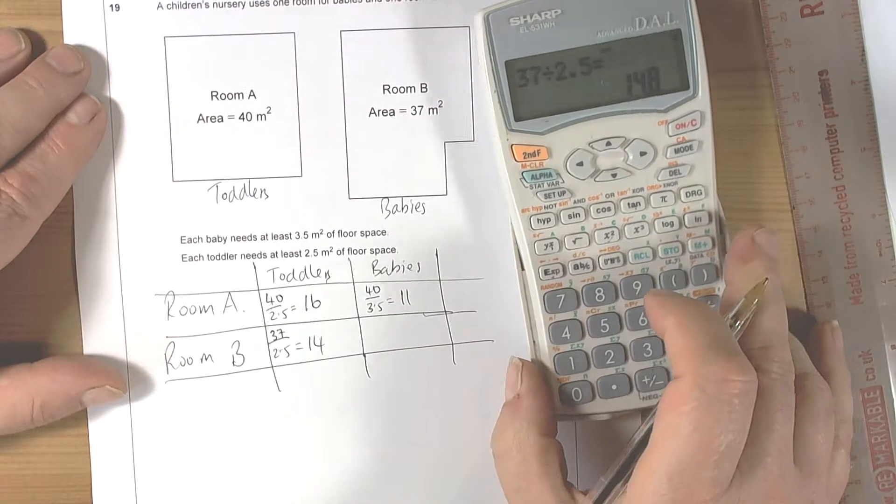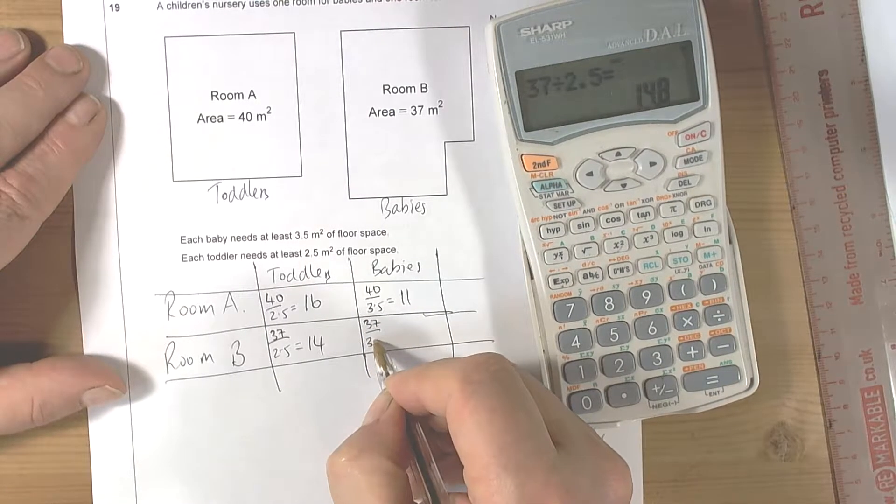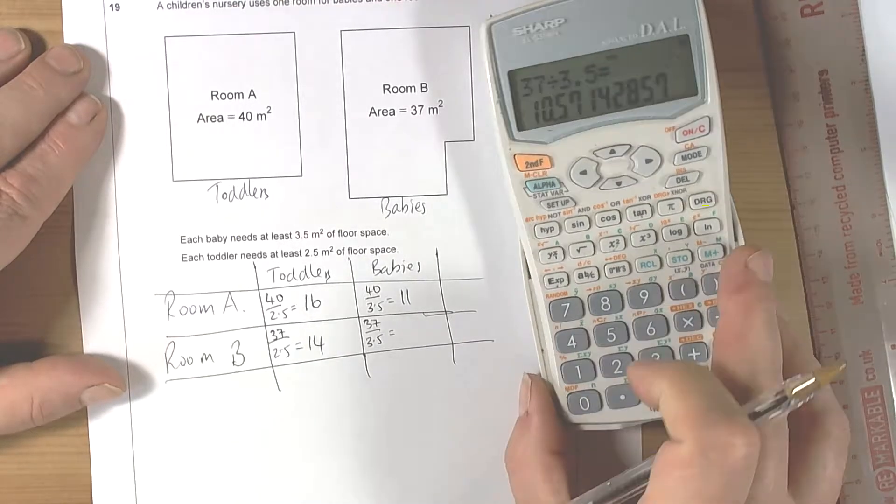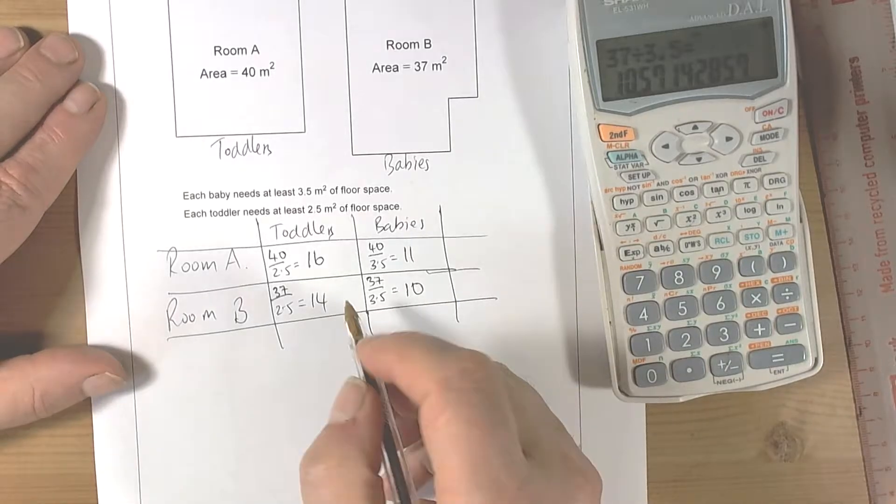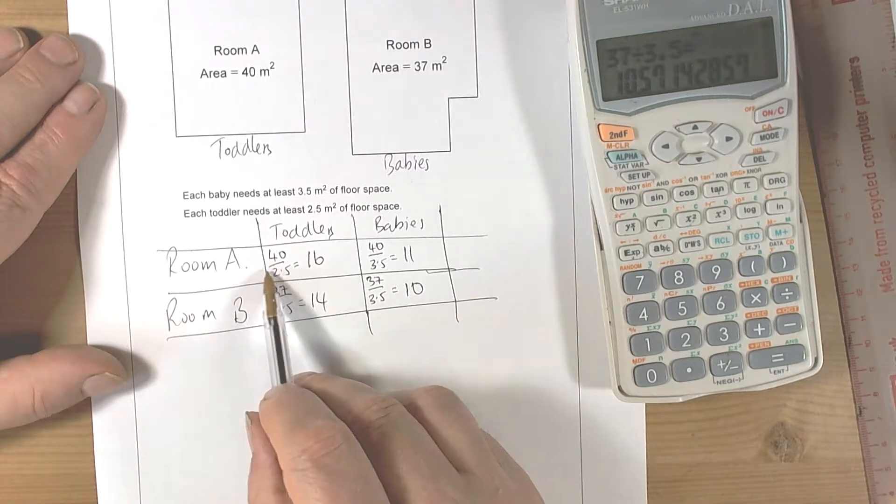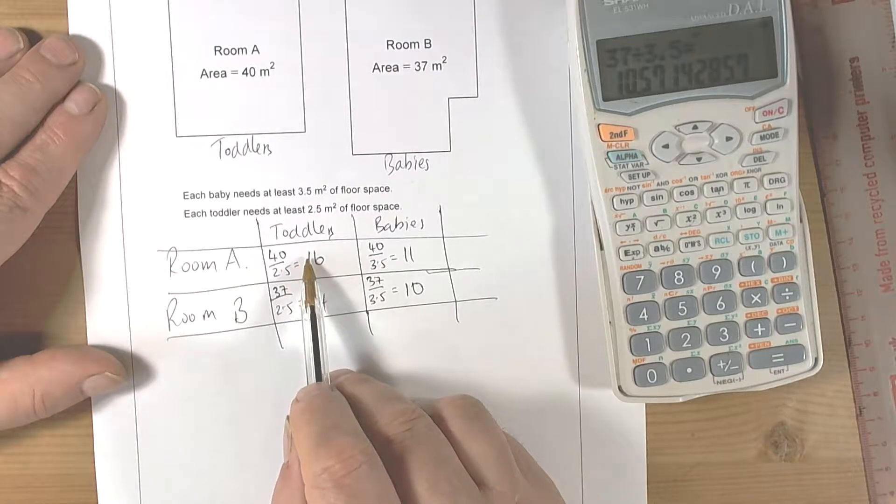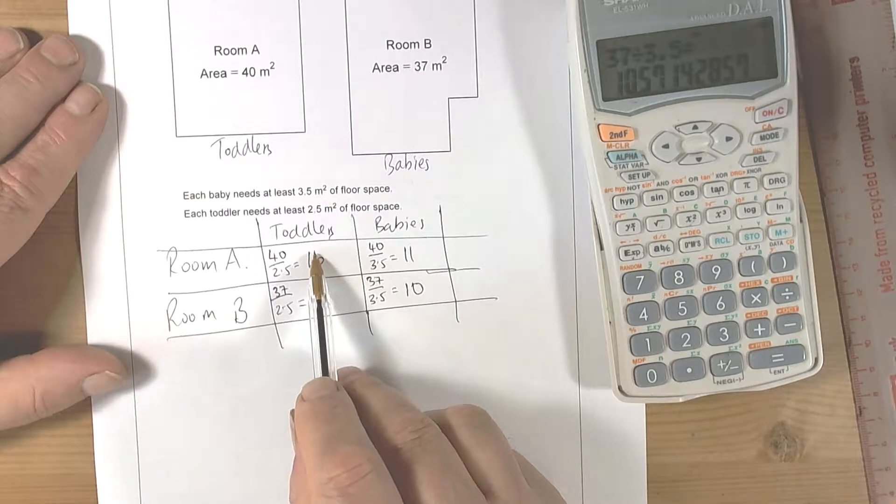And for babies, 37 divided by three and a half - 37 divided by three and a half is equal to 10. Okay, so for room A, if we have the toddlers in room A and the babies in room B, we can get 26.